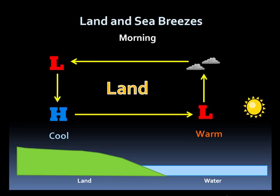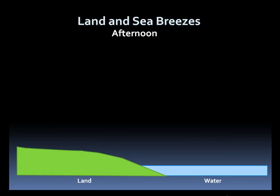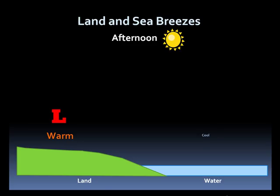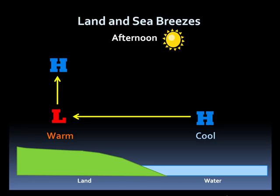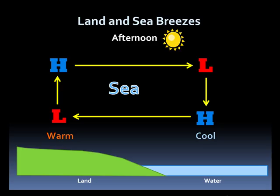Some clouds can form offshore due to the rising air. Now let's consider what happens in the afternoon. The land heats up and is now warmer than the water, resulting in a weak area of low and high pressure developing in the opposite locations. Air will now flow onshore, rise, and then a portion heads back out over the water, completing the circulation. This is called a sea breeze. Clouds commonly form over the land due to the rising air from the sea breeze, and can result in some showers and thunderstorms.